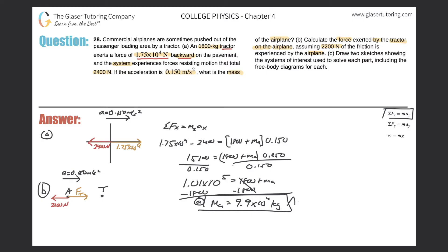We just found the mass of the airplane, so we do know the mass. The sum of forces in the x direction equals mass times acceleration. So we have: force of the tractor minus 2,200 equals the mass of the airplane — 9.9 times 10 to the fourth — multiplied by the acceleration, 0.150. So it's 9.9 times 10 to the fourth times 0.15, then plus 2,200. We get a value of 1.7 times 10 to the fourth newtons. That's how you would solve Part B.